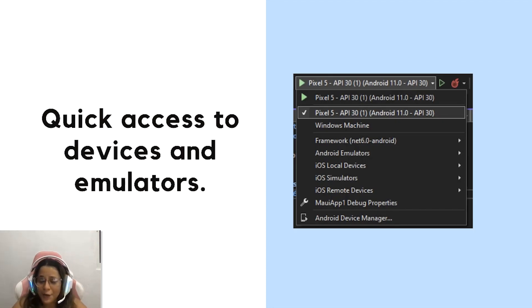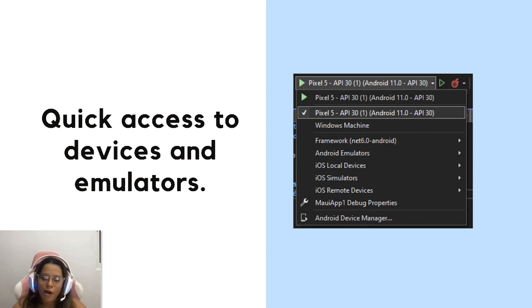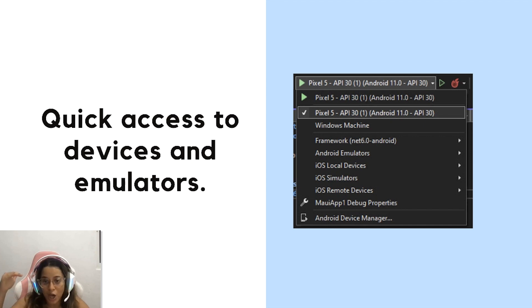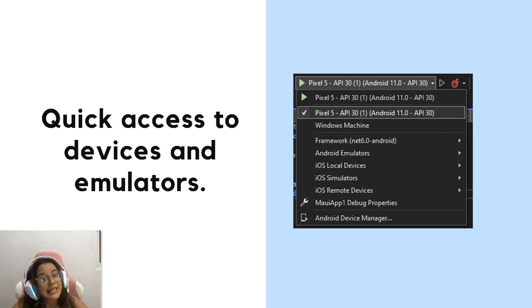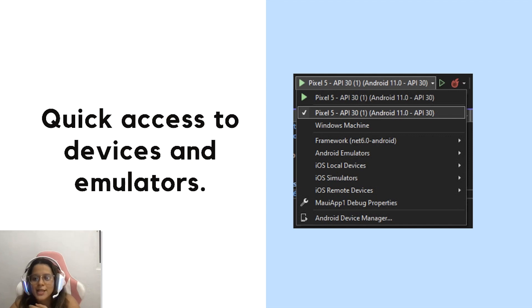Another point I also love is that you have quick access to devices and emulators. In Xamarin, if you have to run on a specific emulator or device, you first have to select which project — for example, set the Android project as the main project, then find the emulator or device. You have to do the same steps for iOS. But in .NET MAUI, in one step you have all the emulators and devices you need, both Android and iOS, as you can see in the image. This is amazing because it saves time.